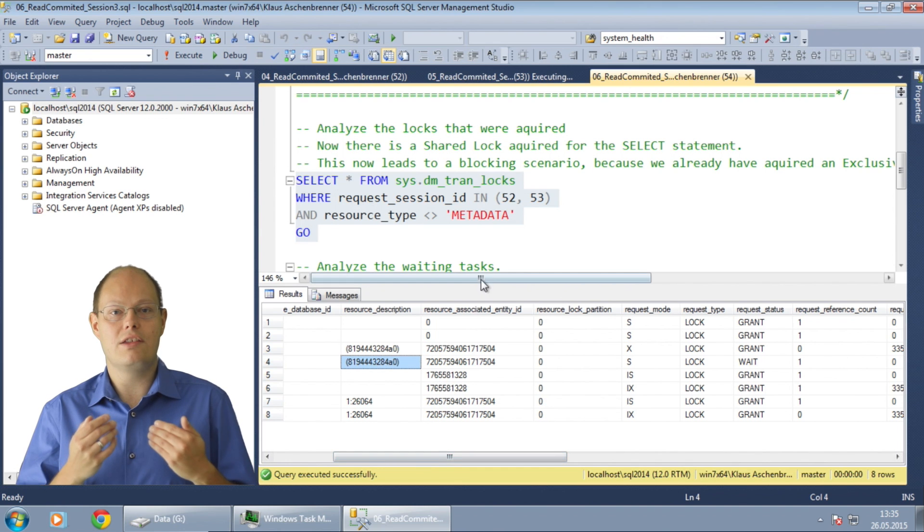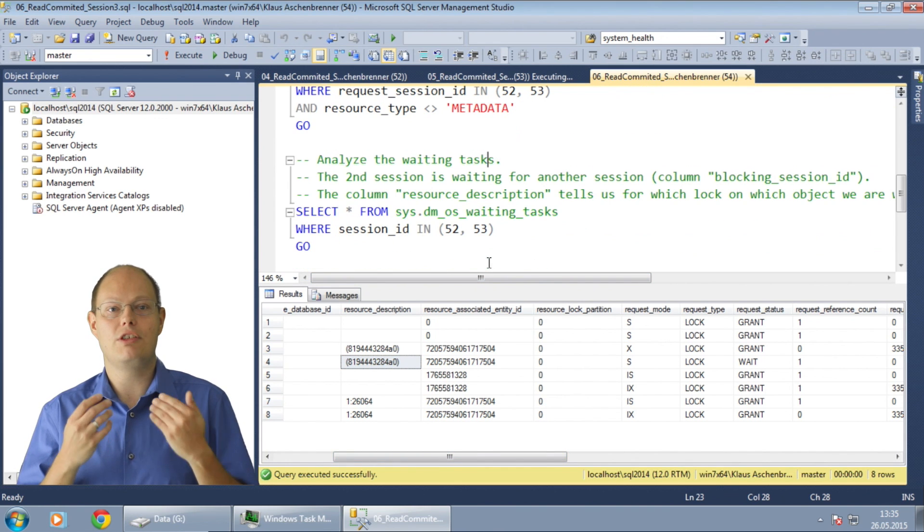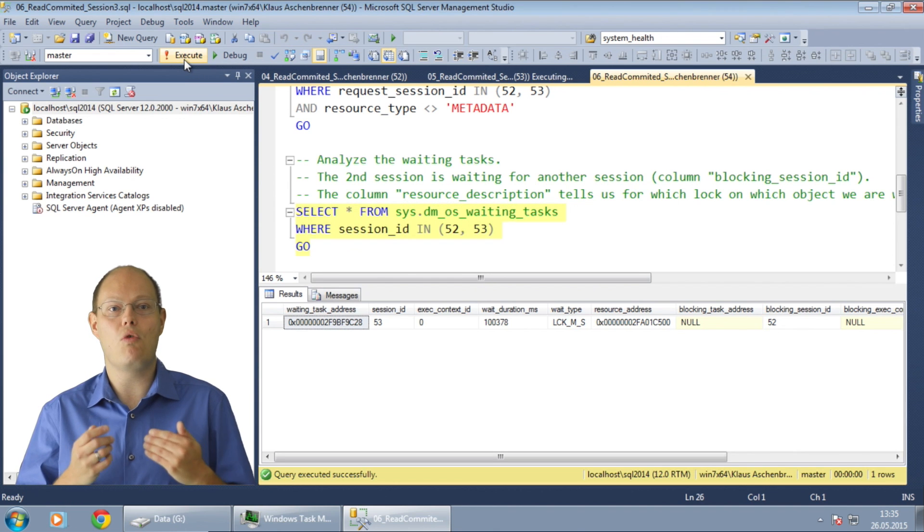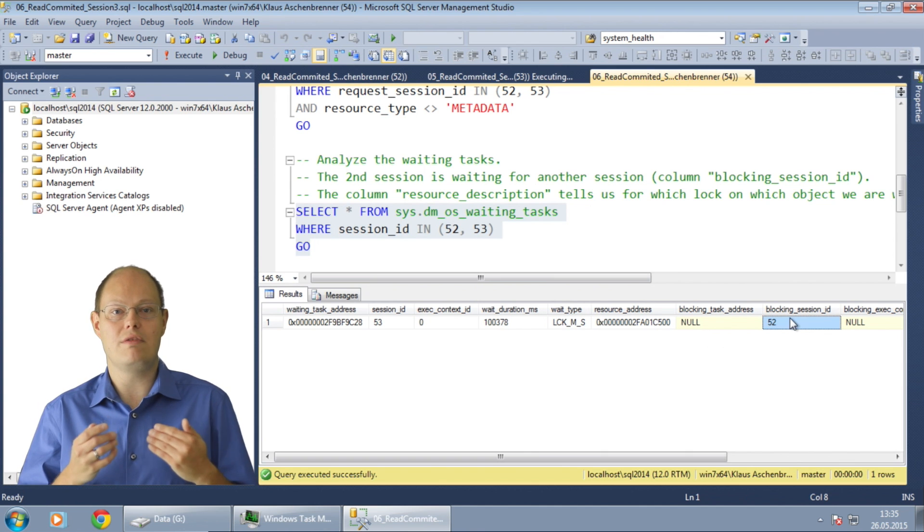In addition you can use the DMV sys.dm_os_waiting_tasks to get more information about the blocked session. As you can see from the output the second session waits on the wait type LCK_M_S and that this session is blocked by the first session. With that DMV it is very easy to find out who is your head blocker. In our case it is the first session.